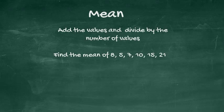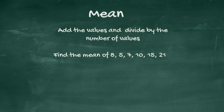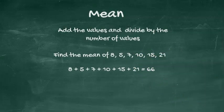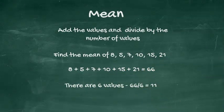Here is an example. Find the mean of 8, 5, 7, 10, 15, 21. First, sum the values, which is 66. The number of data is 6, so the mean equals 66 divided by 6 equals 11.